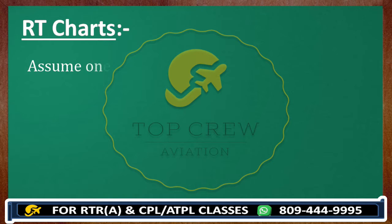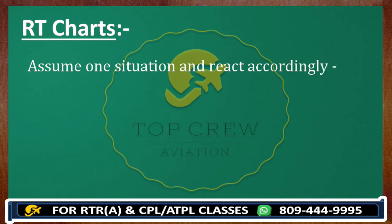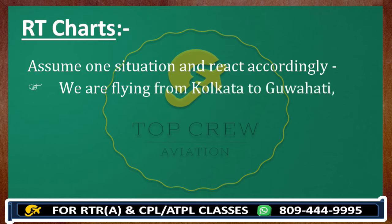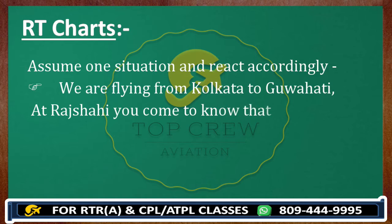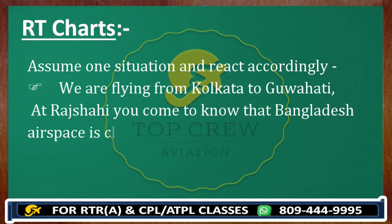Let's assume one situation and react accordingly. We will discuss again in detail, but this is very interesting, so I cannot wait to tell you. If we are flying from Kolkata to Guwahati — this is chart number eight — and at Ratsahi you come to know that Bangladesh airspace is closed, what do we need to do now? Let's have a look at chart number eight.